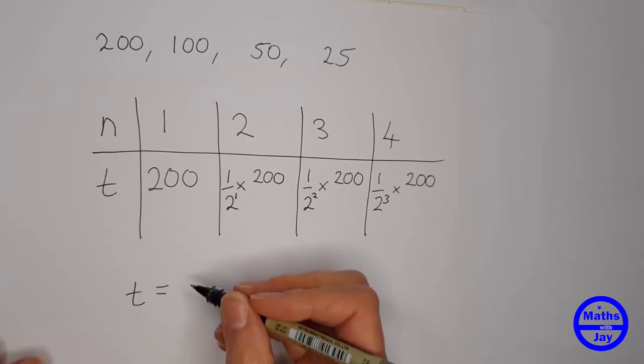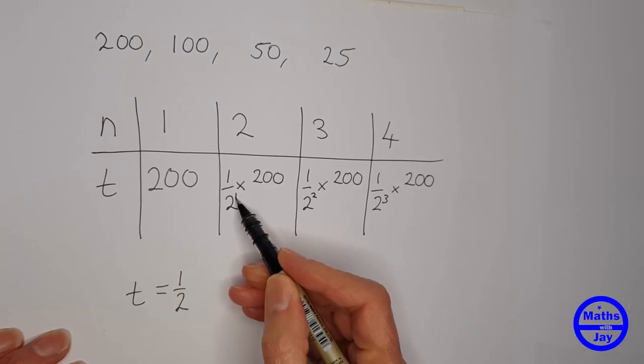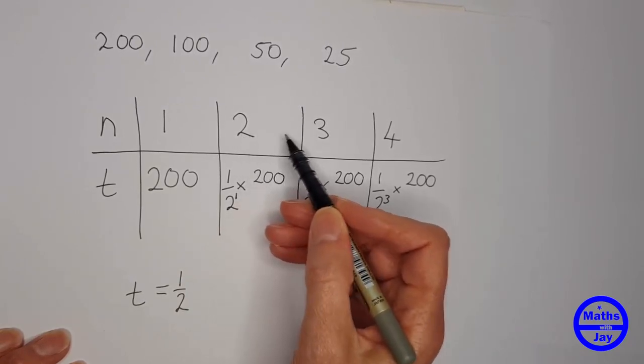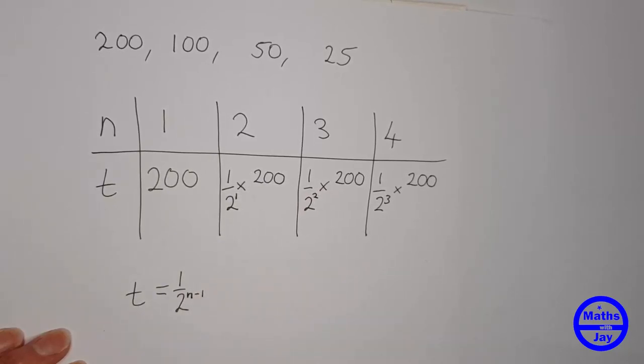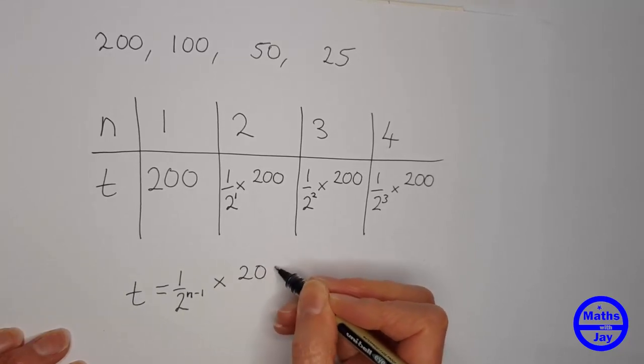So what we've got each time is 1 over 2 to the power of something and that's something each time, so this 1, 2, 3 is 1 less than the 2, 3, 4 isn't it? So that is just going to be 2 to the power of n minus 1, and then each time we're multiplying by 200.